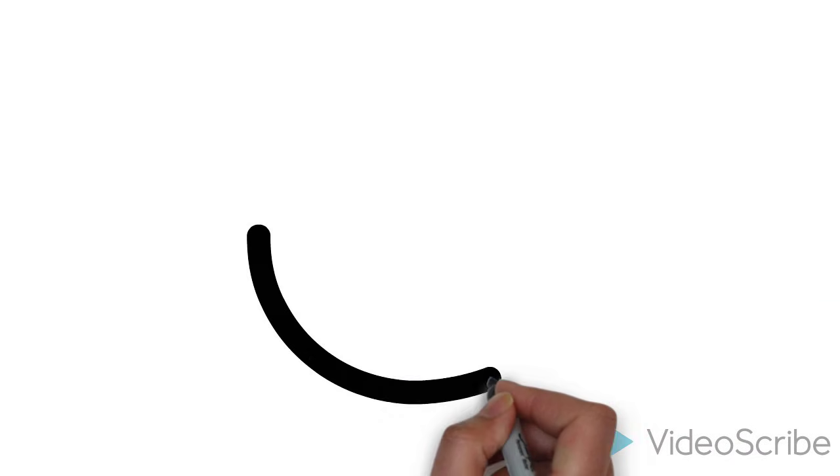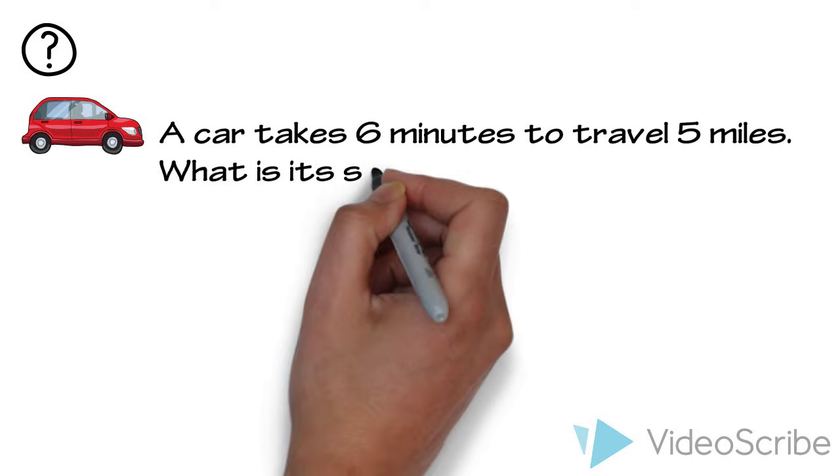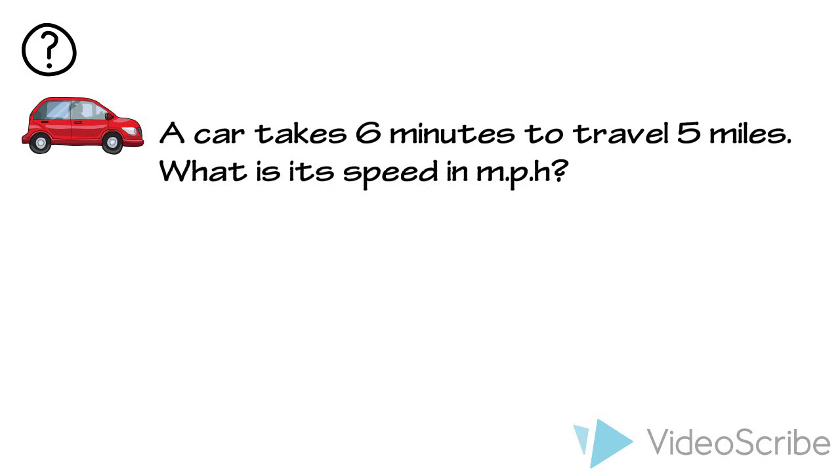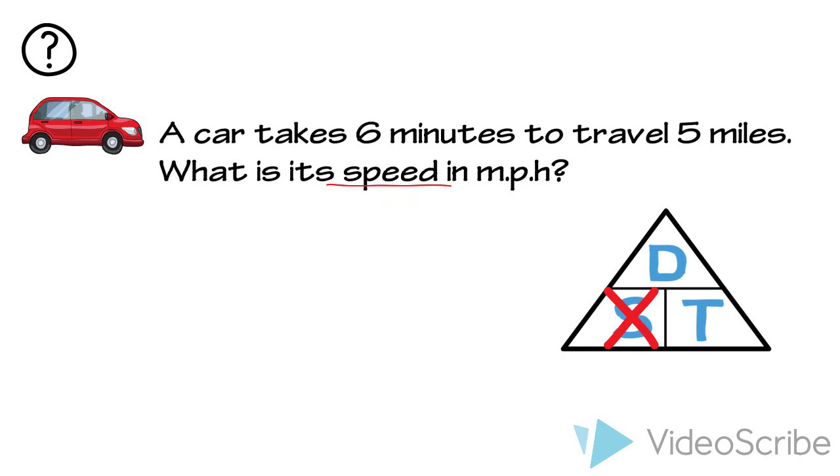Let's apply this to some questions and work through an example of each. A car takes six minutes to travel five miles. What is its speed in miles per hour? So, for this question, we need to find the speed. So we cover up the S on our triangle, which indicates we need to divide distance by time.